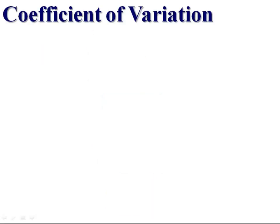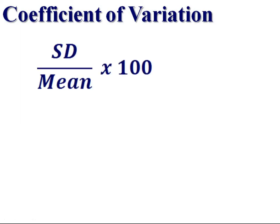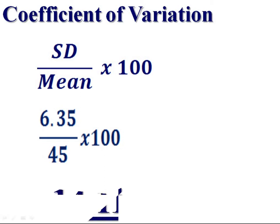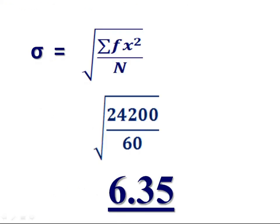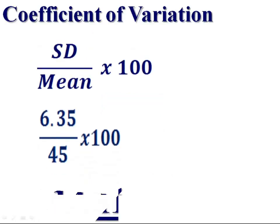Then find coefficient of variation. Standard deviation divided by mean into 100. 6.35 standard deviation divided by mean 45 into 100. That is 14.11. Standard deviation, 6.35. And coefficient of variation, 14.11.